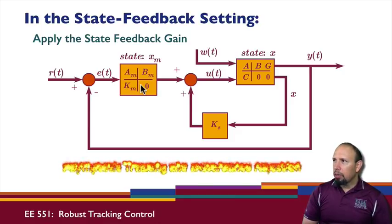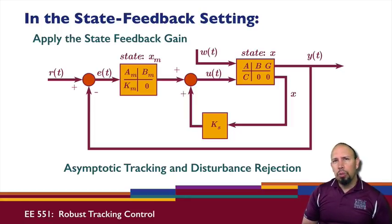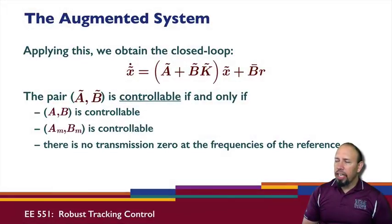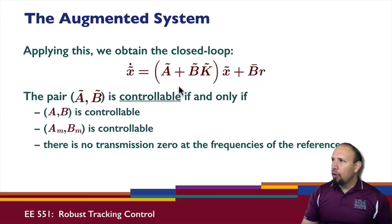The internal model principle says that if our system is stable in this configuration, we will have asymptotic tracking and disturbance rejection — both. Our new closed-loop A matrix is A tilde plus B tilde K tilde, and we need to understand how the controllability of A tilde and B tilde relates to the state feedback gain.